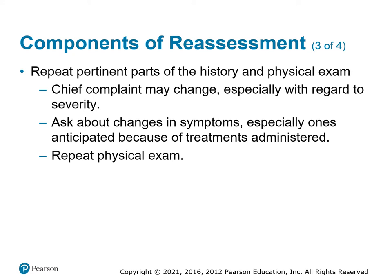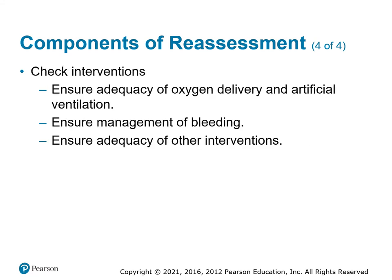Start asking questions — ask about the chief complaint, if it's changed any. Use the severity scale again to figure out if it's getting better. Repeat your physical exam: check anything you found the first time, and check other things to see if symptoms have moved anywhere. Check all your interventions — make sure everything is working correctly, that you're ventilating them correctly, that bleeding control is still maintained, and anything else you did for the patient is taken care of.